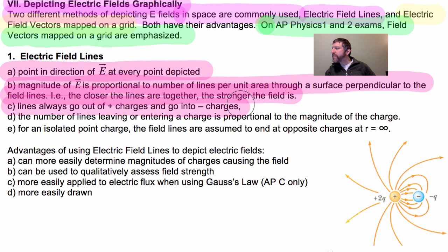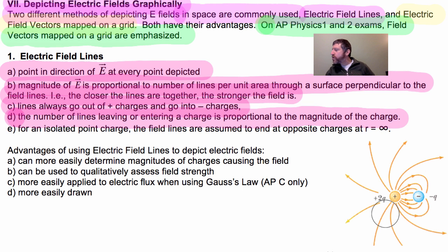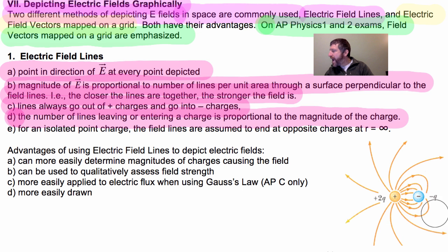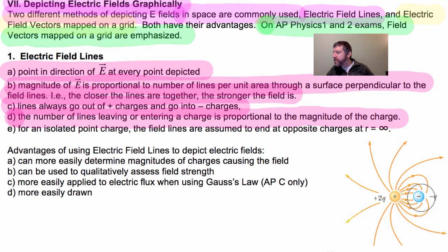These field lines always go out of positive charges — notice the arrows point out of the positive charge — and they always go into negative charges. An advantage of this mapping is that the number of lines leaving or entering a charge is proportional to the magnitude of the charge. On this picture, this charge is 2Q and this is 1Q. Counting the lines leaving the larger charge gives 16 field lines, and counting those entering the smaller charge gives 8 — because 2Q has double the charge, it has double the number of field lines.